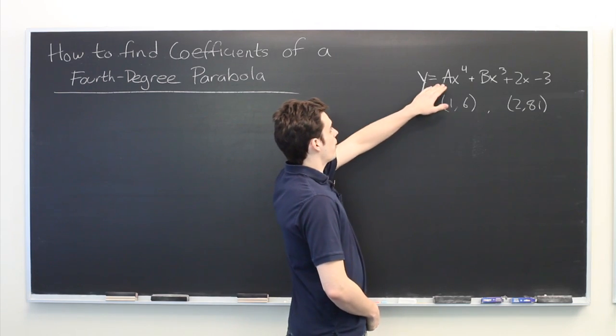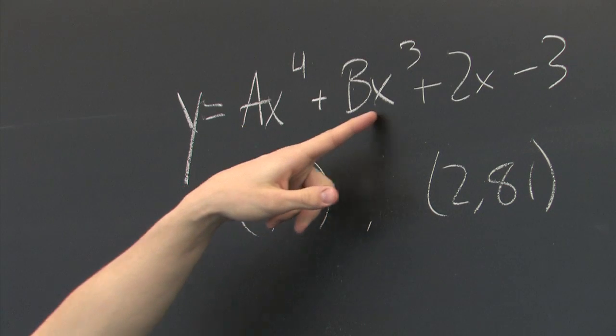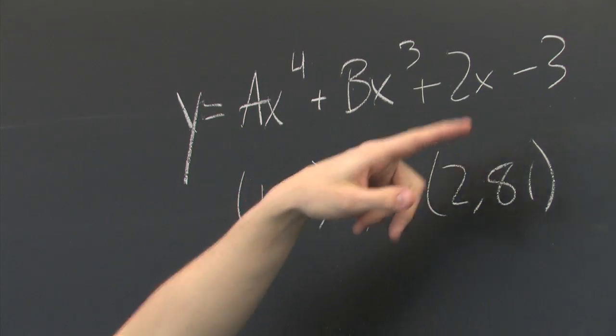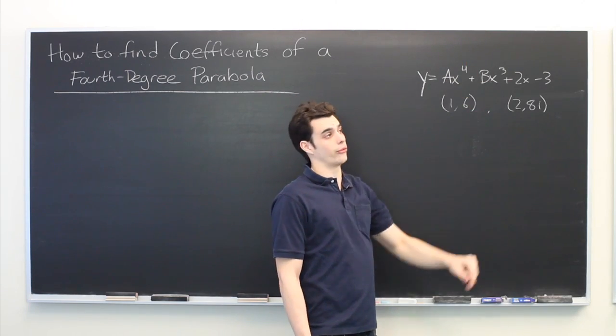So here we have a fourth degree polynomial defined by y equals ax to the fourth plus bx to the third plus two x minus three, where a and b are unknown constants that we're trying to solve for.